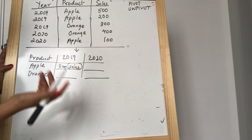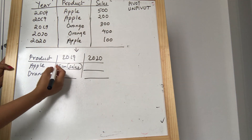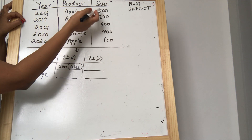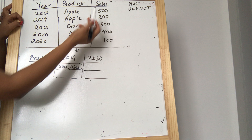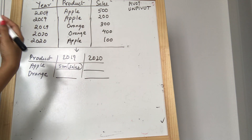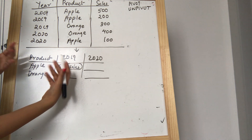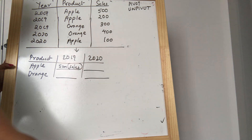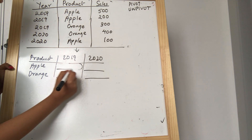That is my requirement. But if you have a requirement to find the maximum sales of a product — for example, the maximum apple sales for 2019 is 500 — or if you want the minimum sales, you use minimum. Anyway, when you pivot, you must use some aggregate function — some minimum, maximum, or any other aggregate function. So here we are finding the sum of sales.